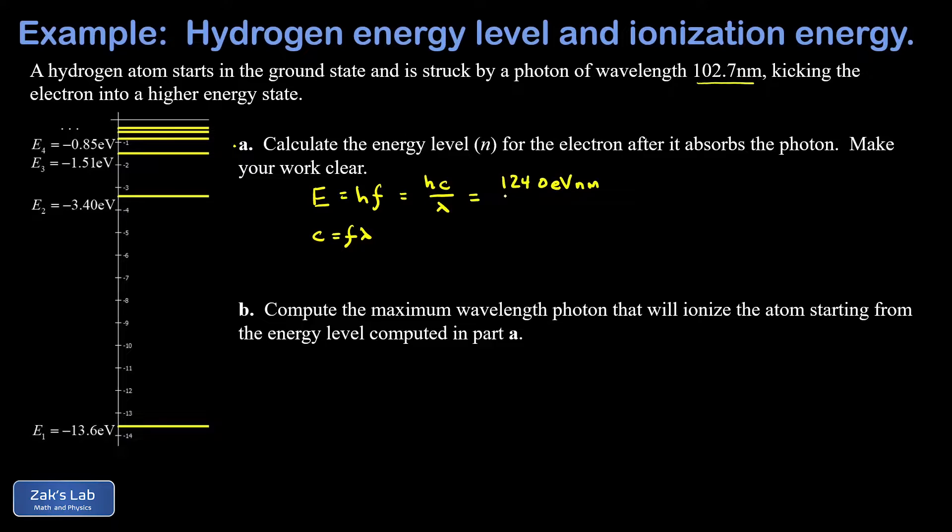Then our wavelength was 102.7 nanometers. This gives me an energy of 12.1 electron volts, just keeping three significant digits. Now to figure out which energy level we're looking at, we simply take the ground state energy of -13.6 eV and we add the 12.1 eV to it and see what we end up with.